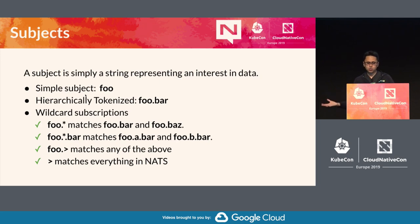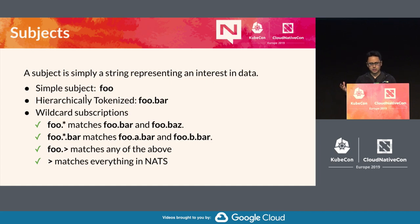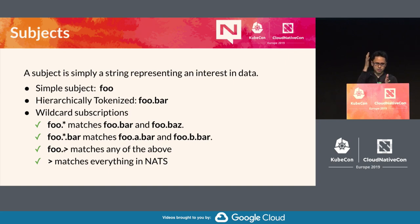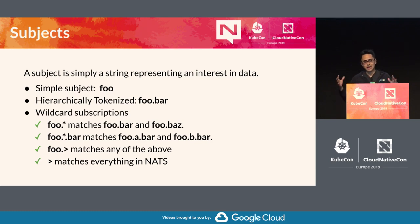You publish and subscribe to subjects. Simple subjects, for example, foo. You can use the dot character to create hierarchies of subjects, for example foo.bar. Based on those dot-delimited subjects, you can create wildcards. For example, foo.* would match anything published to foo.bar or foo.baz. foo.*.bar will match anything like foo.a.bar or foo.b.bar. There's also a full wildcard that can match anything from a certain point in the subject after a dot — even from the beginning — so you can inspect all traffic flowing through NATS.